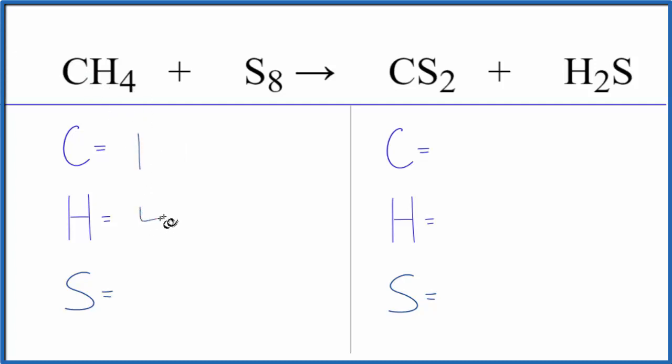One carbon, four hydrogens, eight sulfurs. Product side, one carbon, two hydrogens. For the sulfurs, be careful, you have two here, plus you have one here, three sulfur atoms.